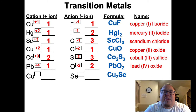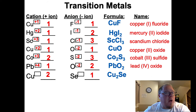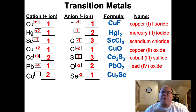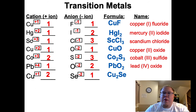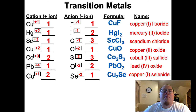This is copper and selenium - Cu2Se. So this would be selenide. Copper selenide, but what's the charge on copper? It's a 2 to 1 ratio based on the formula, and selenium is a negative 2 charge. Since selenium is negative 2 and it's 2 to 1, we have two coppers for every one selenium. That means copper actually has to have a smaller charge - it's got to be positive 1, because positive 1 and positive 1 add up to cancel out the negative 2 of the selenium. So this is copper 1 selenide.